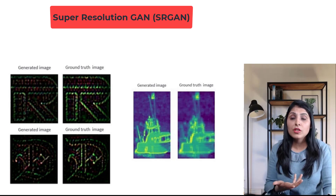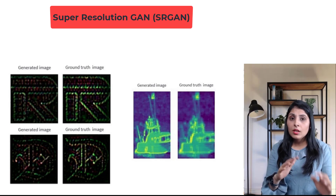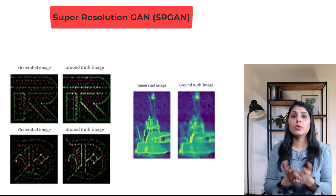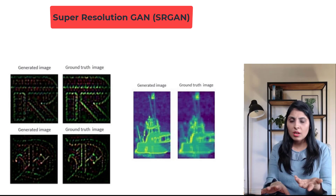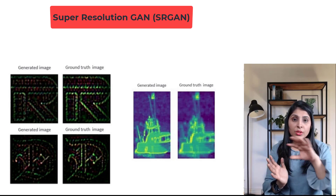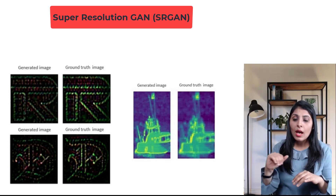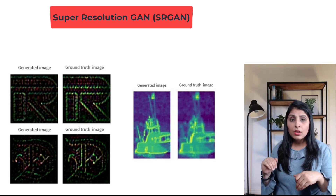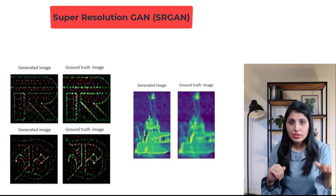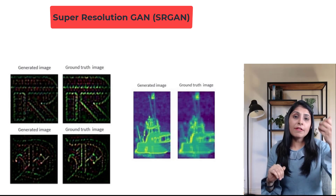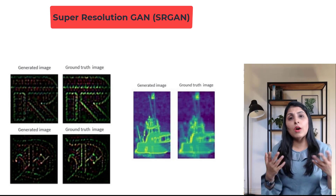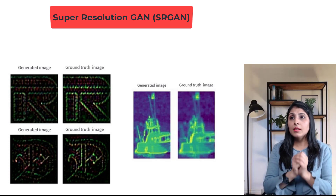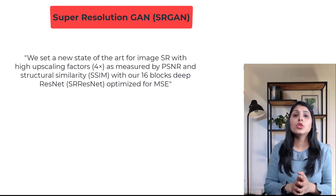To get these feature maps, you can use a pre-trained model — for example VGG or ResNet — pre-trained on ImageNet. Pass both images through that pre-trained network and, let's say after five layers, pick the feature maps. Pass the original high resolution image through that pre-trained network again, pick the feature map after five layers, and then compare the feature maps of both. This is how you calculate the content loss.